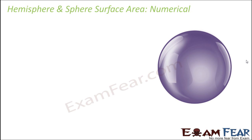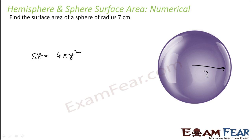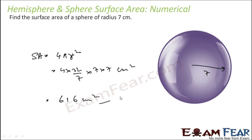Let us take some numericals to understand these concepts. Find the surface area of a hemisphere with radius 7 cm. The surface area of a hemisphere is 4πr². With radius 7, it is 4 × (22/7) × 7 × 7 cm², which gives 616 cm².